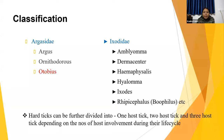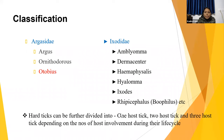Depending on the number of hosts needed to complete their life cycle, hard ticks can be divided into three groups: one-host ticks, two-host ticks, and three-host ticks. One-host ticks need a host only once to complete their life cycle. Two-host ticks need a host twice — the host can be the same or different. Three-host ticks need a host three times to complete their life cycle.